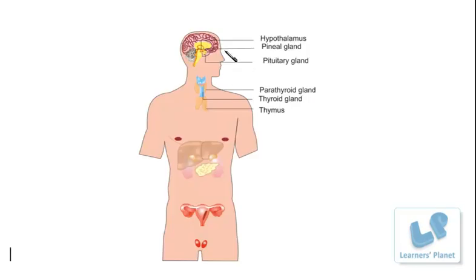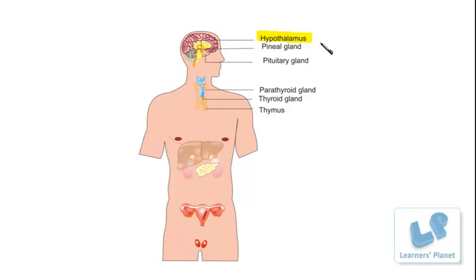The very first gland we need to study is the hypothalamus. This hypothalamus is a very important gland located near the midbrain — between the midbrain and the hindbrain, or at the roof of the cerebrum. There is a structure in the brain known as the diencephalon, and near this diencephalon the hypothalamus is located. The major function of the hypothalamus is to secrete releasing hormones.